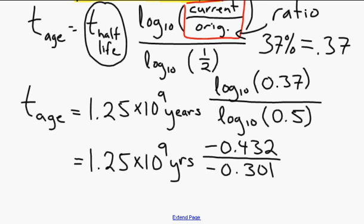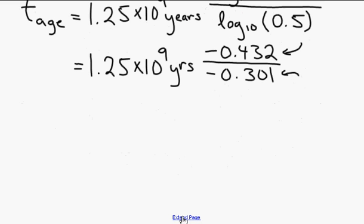In trying to figure out what to expect in this answer, I notice that the number on top, the numerator, is bigger than the number on bottom, the denominator. So this fraction is going to be greater than 1. The age of this rock should be greater than 1 half-life.